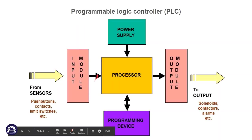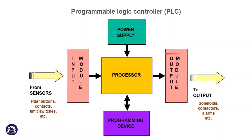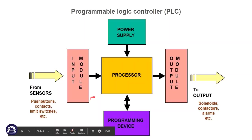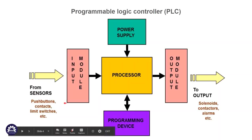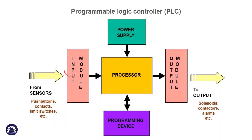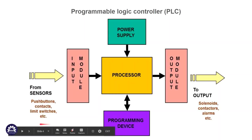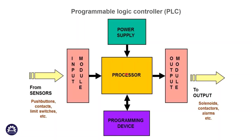In the main PLC block diagram, there is an input module, a processor, and an output module. There is also a programming device and an independent power supply. The external input module receives signals — when contacts or switches are activated, the input module converts external signals to the processor.